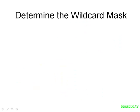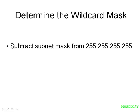Luckily, we have a few shortcuts to easily make sense of wildcard masks, just like the tips and tricks we went over in IP addressing and subnetting. First, we'll look at how to determine a wildcard mask — this is really useful if you need to create an access list. The trick is: if you have a subnet mask, subtract it from 255.255.255.255, all 1s.